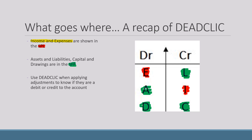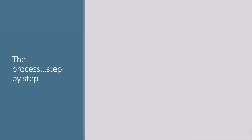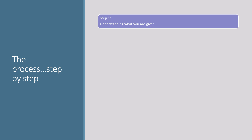You also need to use DEADCLIC for your adjustments — think about which account is going to be increasing and how that applies to DEADCLIC, because you can always use it in terms of the increase happening to an account. Now I'm going to take you through my step-by-step approach to tackling extended trial balance questions. Step one is all about understanding what you're given in the question.